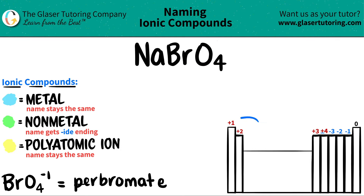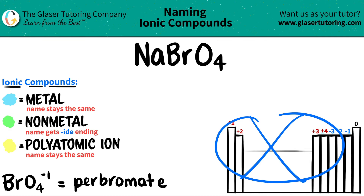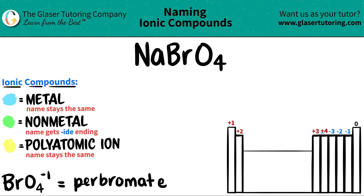Now remember, polyatomics are never going to be on the periodic table — you need to memorize those. That's why I wrote down the polyatomic we're going to see in this example. BrO4, which always has a negative one charge. You should memorize what the polyatomic is, the charge, and the name. BrO4 minus one is always called perbromate.